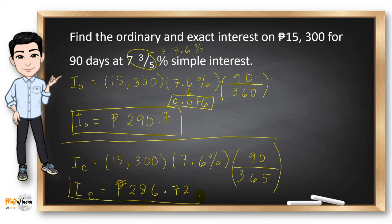So our discussion a while ago is correct because the ordinary interest is greater than the exact interest.